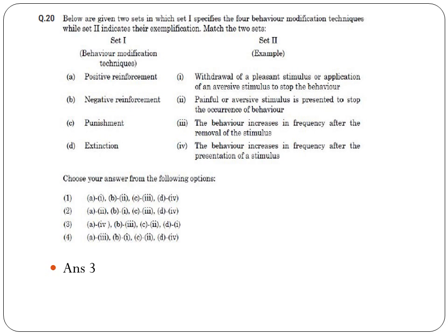Punishment — you all know what that is. Extinction is the mere absence. Painful or aversive stimulus is always a punishment. So the correct matching is: A (positive reinforcement) = 4 — behavior increases in frequency after the presentation of a positive stimulus. B (negative reinforcement) = 3 — behavior increases in frequency after the removal of a stimulus. C (punishment) = 2 — painful or aversive stimulus. D (extinction) = 1 — withdrawal of pleasant stimulus or application of aversive stimulus to stop the behavior. If you have good English vocabulary and can read and understand things, this question is not a big problem.